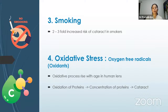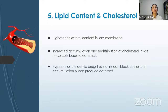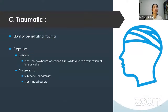Smoking causes a two-to-three fold increased risk of cataract. Oxidative stress from oxygen free radicals rises with age in the human lens, leading to oxidation of protein concentration and ultimately cataract. The lens membrane contains the highest amount of cholesterol; increased accumulation and redistribution of cholesterol can lead to cataract, while hypocholesterolemic drugs like statins blocking cholesterol accumulation can also paradoxically cause redistribution leading to cataract. Trauma — whether blunt or penetrating — with capsular breach causes the lens to swell with water and turn white, whereas without breach, subcapsular and rosette cataracts are seen.